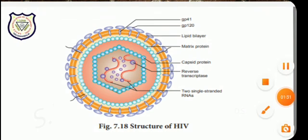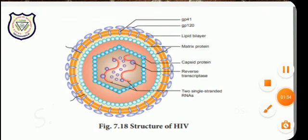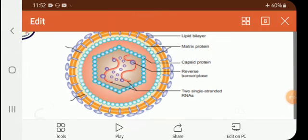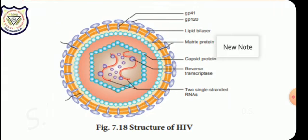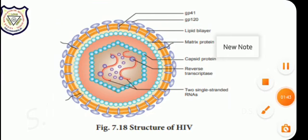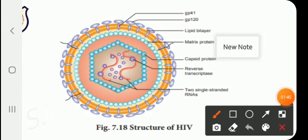The spherical shape — the diagram label shows the structure clearly. Number one point: spherical shape. Number two: outer layer spikes. If you look at the knob-like structure, the glycoprotein is GP120.